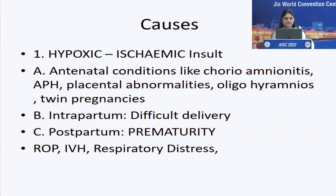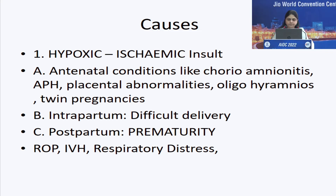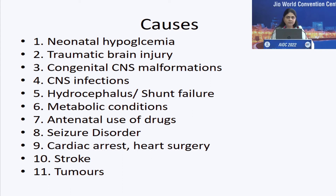Coming to the causes, the most important and most common cause of CVI is a hypoxic and/or ischemic insult. Depending on the time when this insult happens, there are various causes: antenatal, intrapartum, postpartum, and many others. When taking a history, you should know what causes CVI or what could be a precipitating factor. Prematurity, ROP, intraventricular hemorrhage, respiratory distress, stormy NICU course — all of these factors are very important. The hypoxic ischemic insult of prematurity is the commonest.